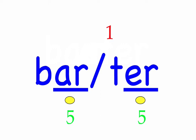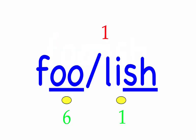Row nine. Foolish. That act was foolish. First syllable: foo, two sounds, F-oo. Second syllable: lish, three sounds, L-I-Sh. Foolish — mark the word.